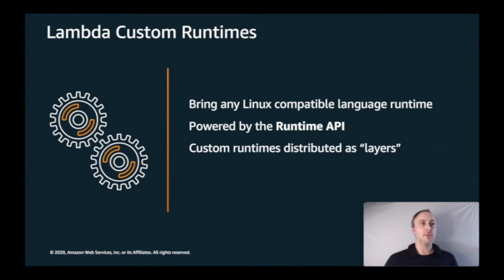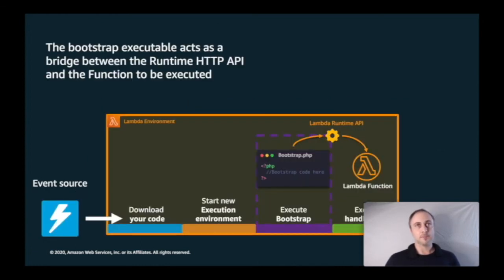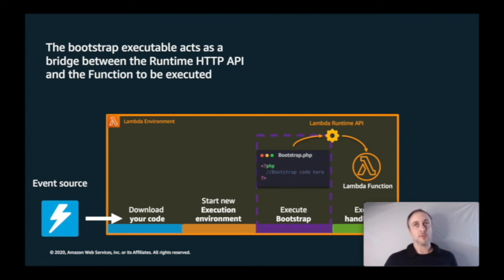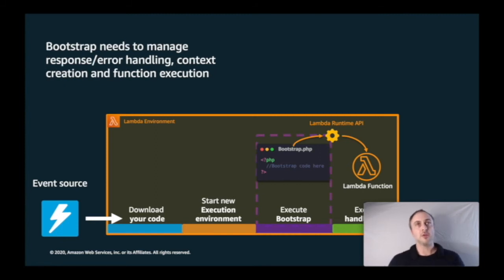If you want to build your own custom Runtime API, you need to create a special file called a bootstrap. The bootstrap acts as a communication bridge between the function handler and the Lambda execution environment, using the Runtime API and special environment variables. Its job is to help the Lambda execution environment understand how to run and execute your code in the language you bring.